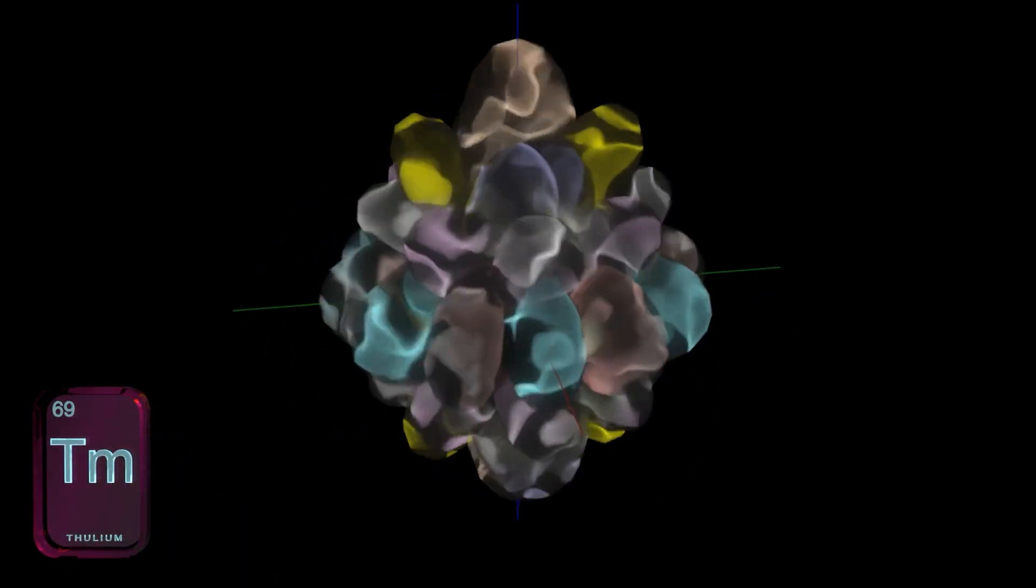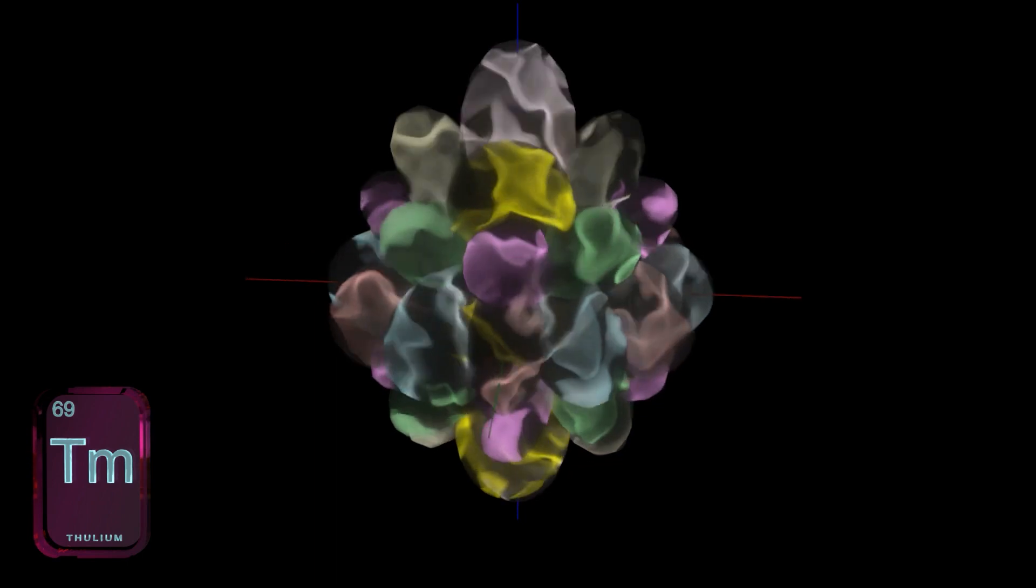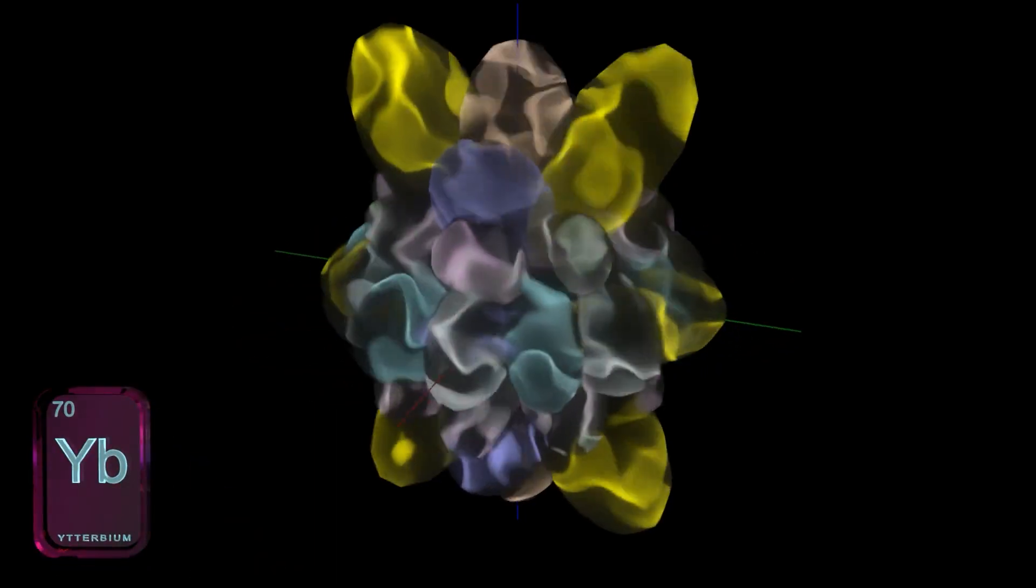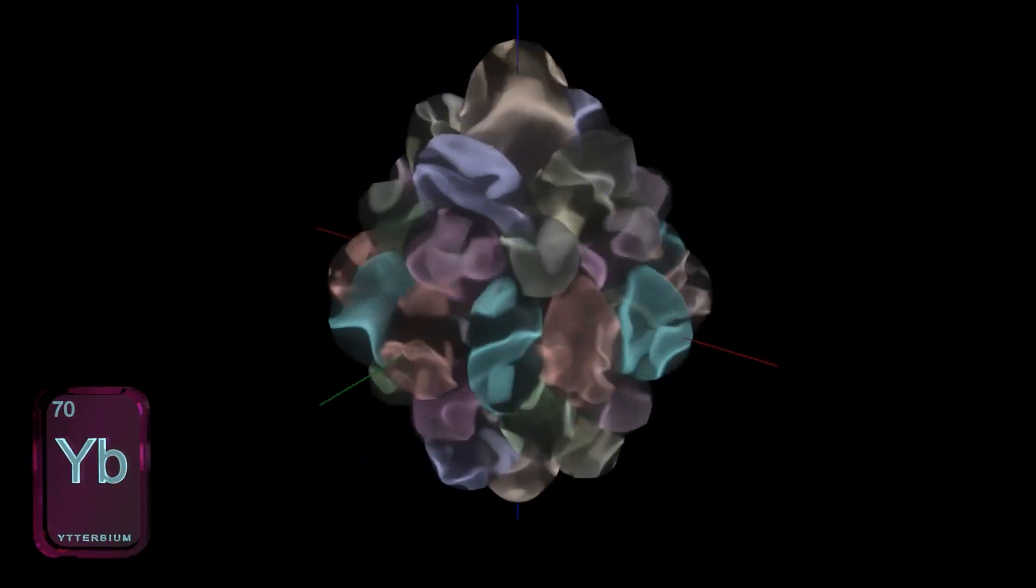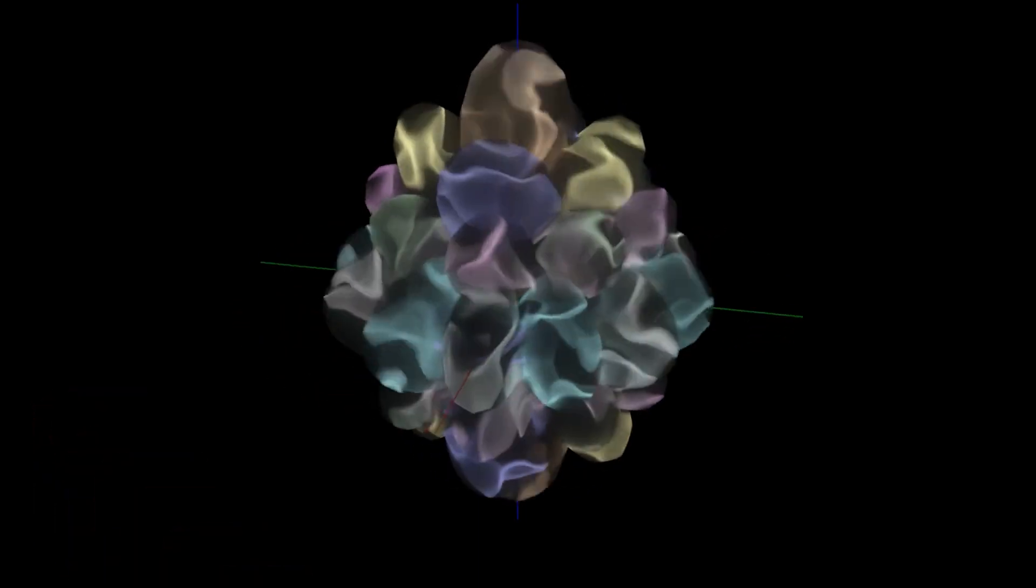Thulium, 4f13. Ytterbium, 4f14. And the seven orbitals now have 14 electrons.